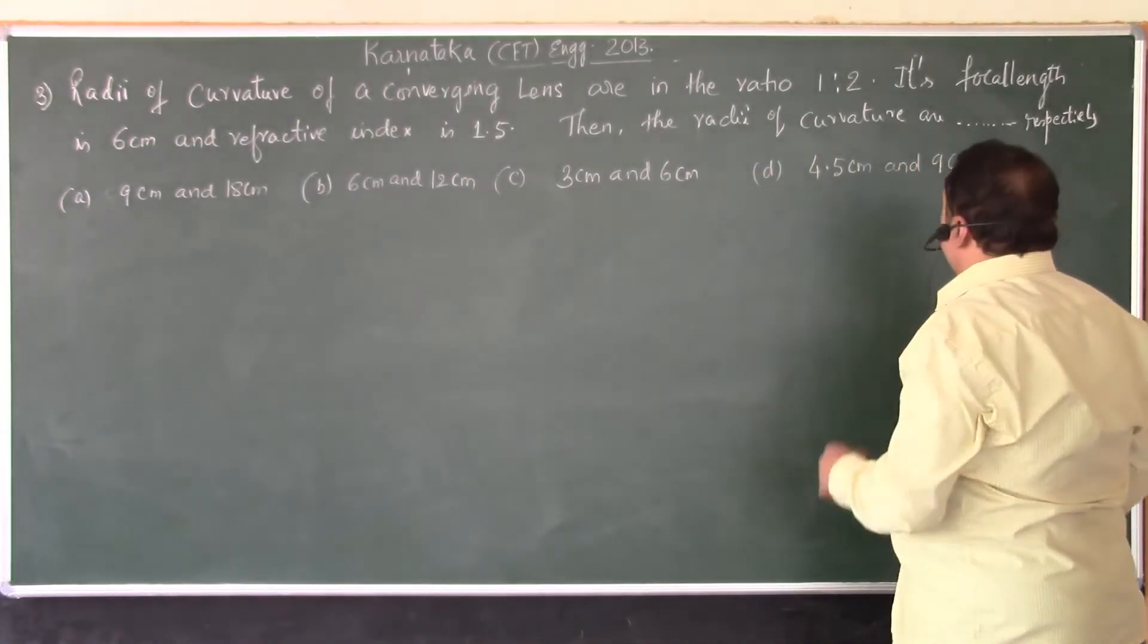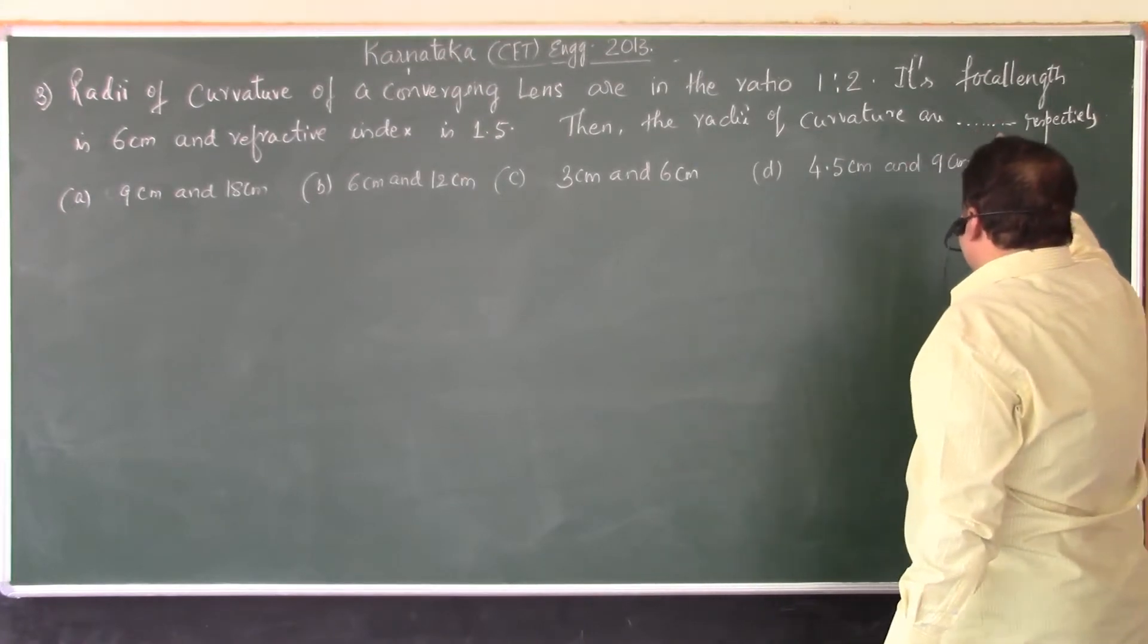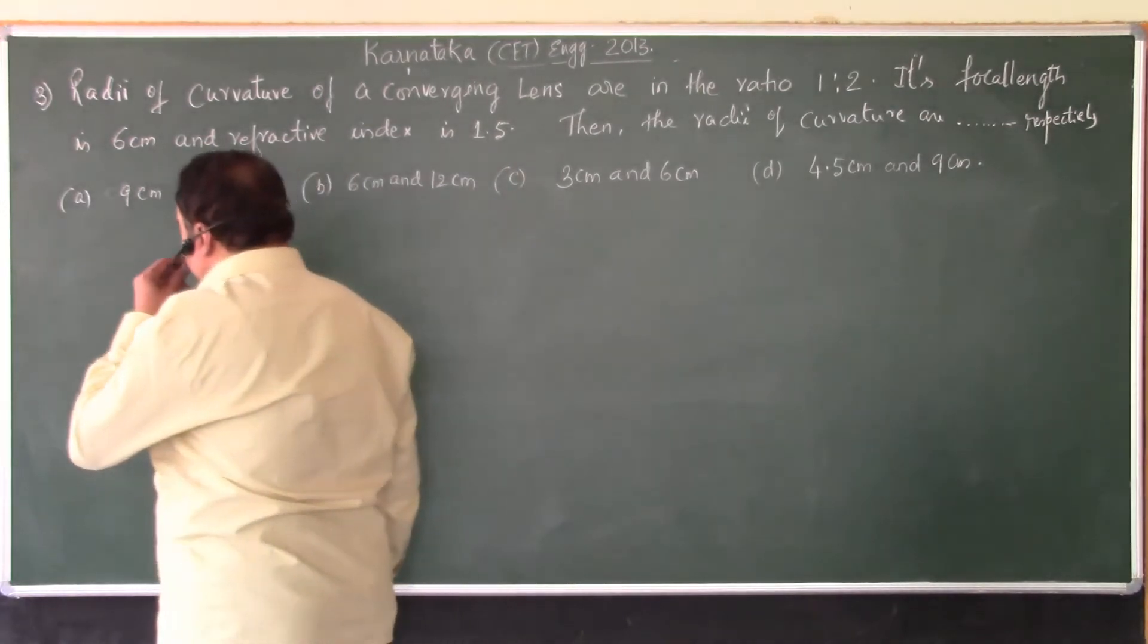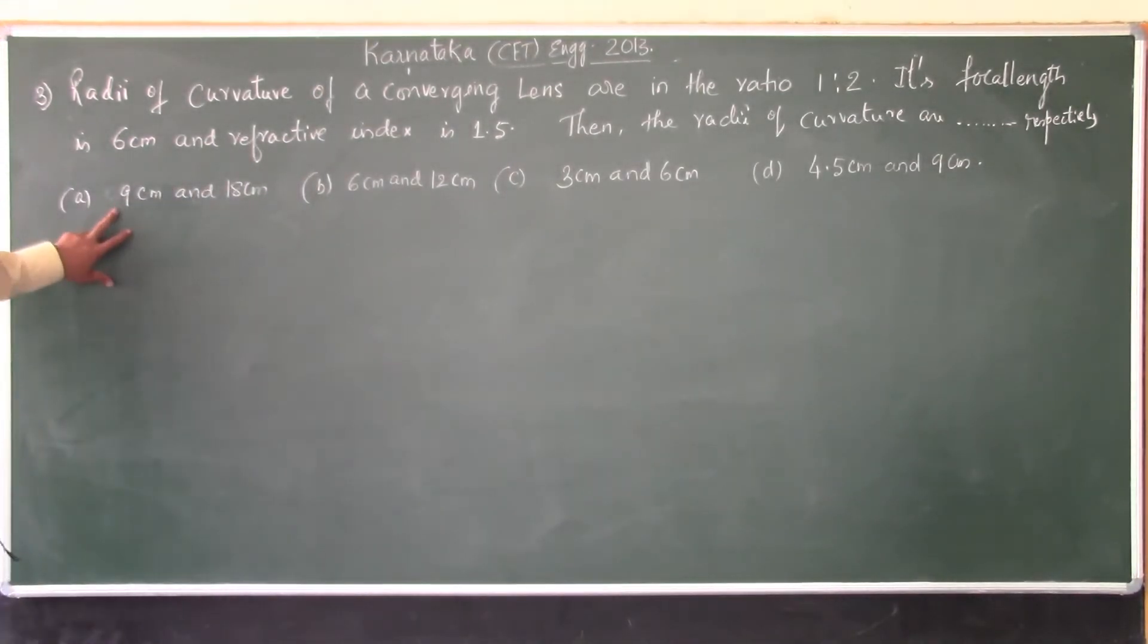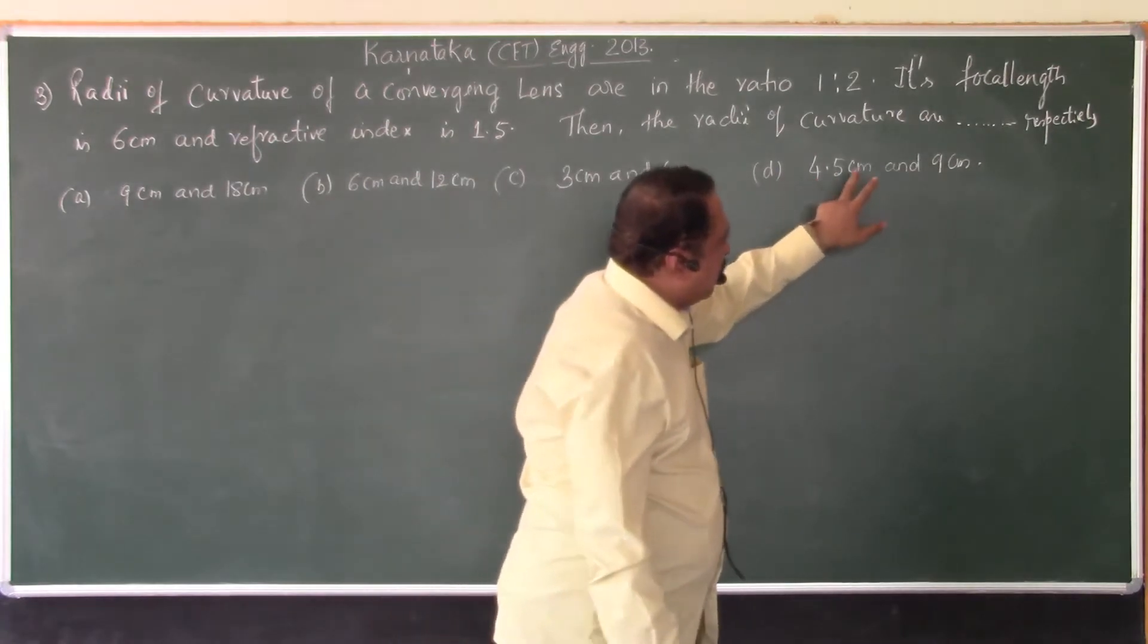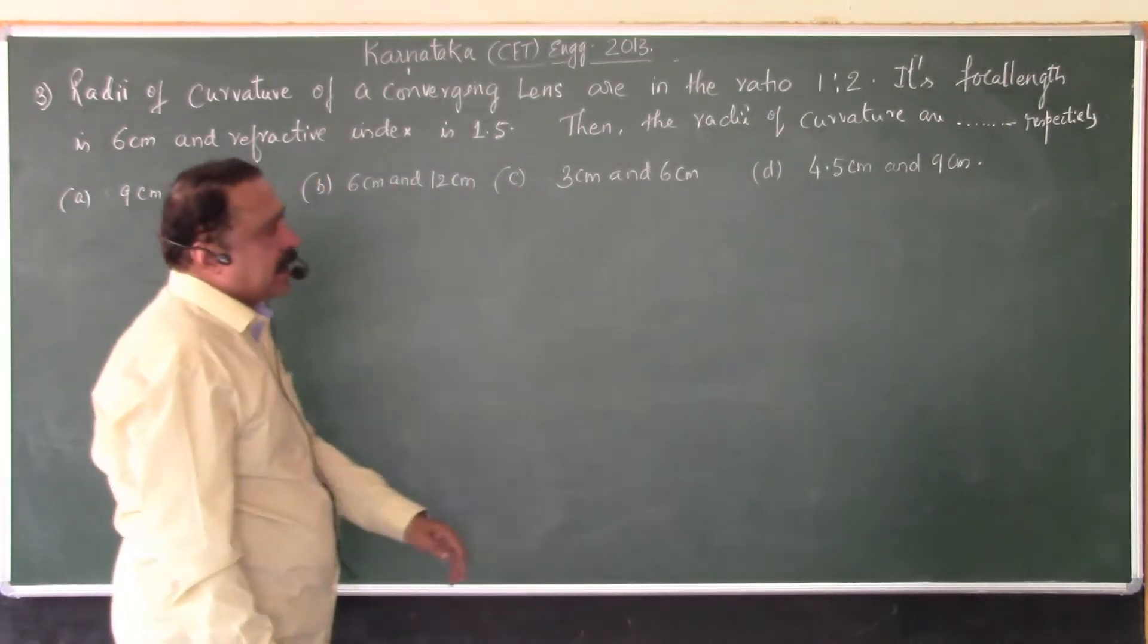Then, the radii of curvature are dash respectively. We have to fill up the dash. The four options given are: the radii of curvature will be 9 centimeter and 18 centimeter, 6 and 12, 3 and 6, 4.5 centimeters and 9 centimeter.